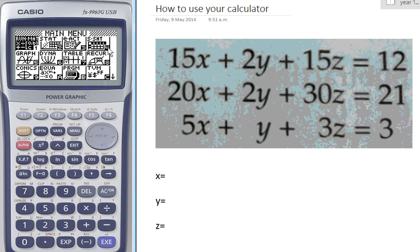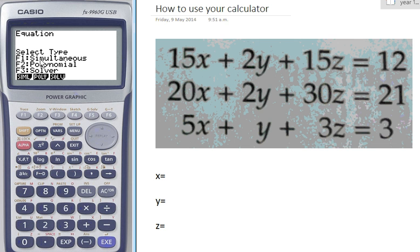So when you start your graphics calculator, you'll have a screen that looks like this. You want to scroll down to where it says equations and press EXE. We're doing simultaneous equations, so we want to press F1.